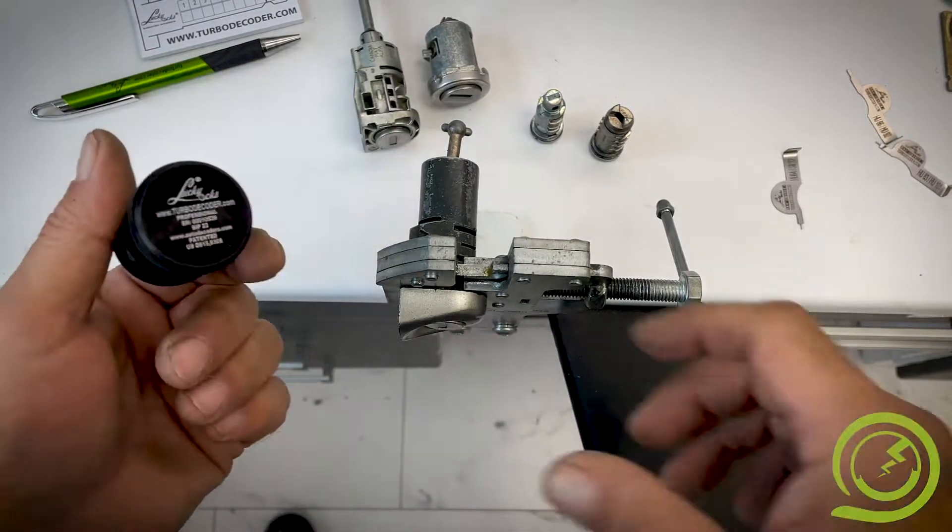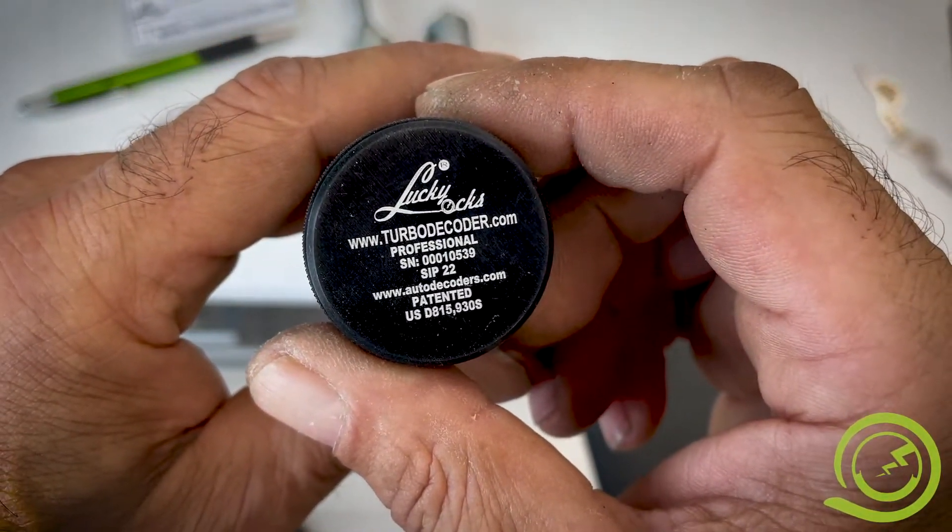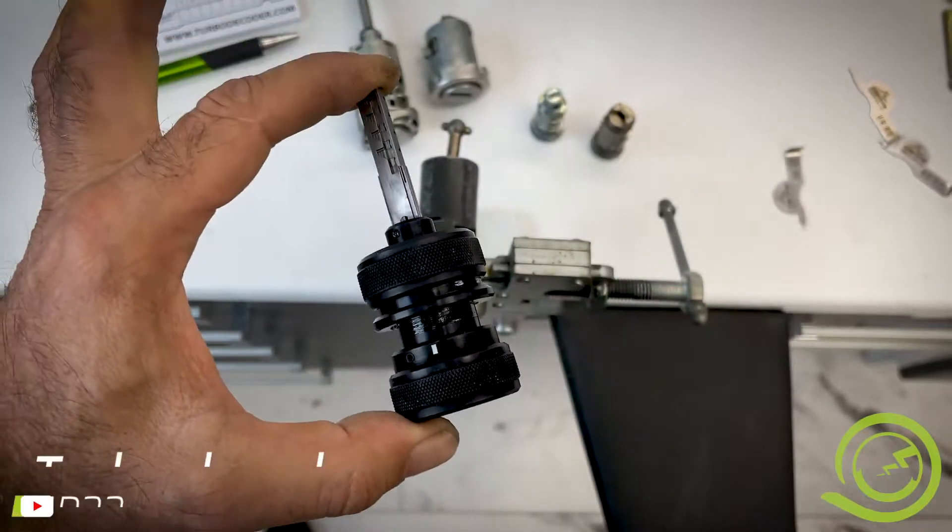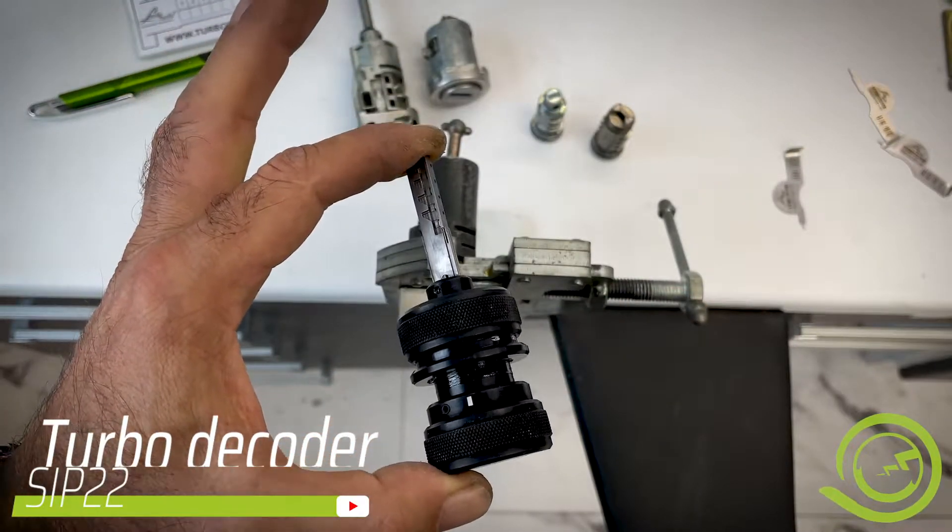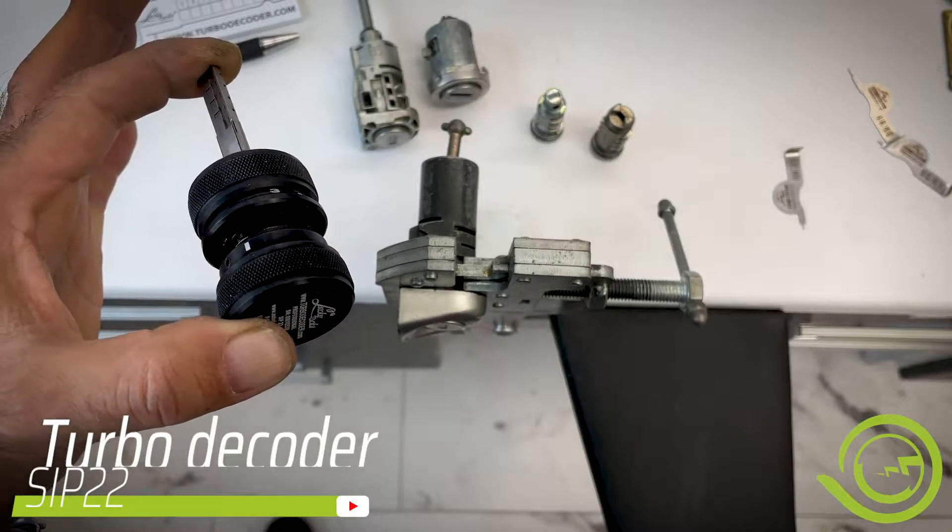Hello, this is technical video instructions on how to use the SAP 22 automatic turbo decoder for Italian cars: Fiat, Lancia, Alfa, Iveco, and Maserati.